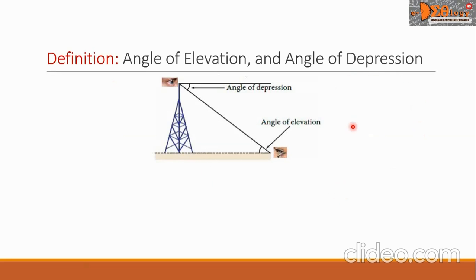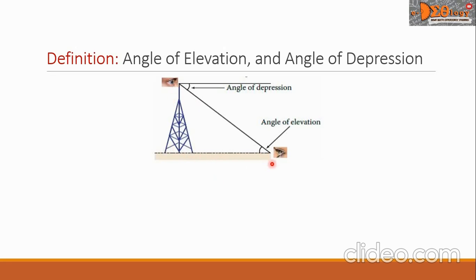The figure here will help us understand the angle of elevation and angle of depression. Here we have a tower, and we assume that there are two persons present in the figure — one is on the ground and the other person is on top of the tower.